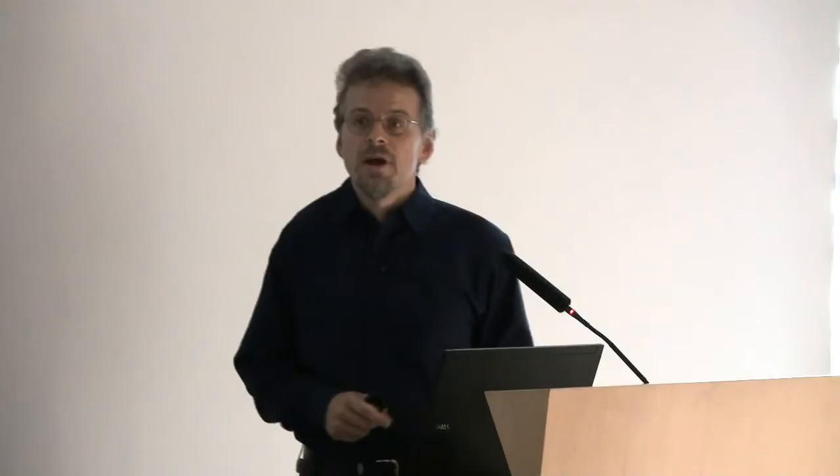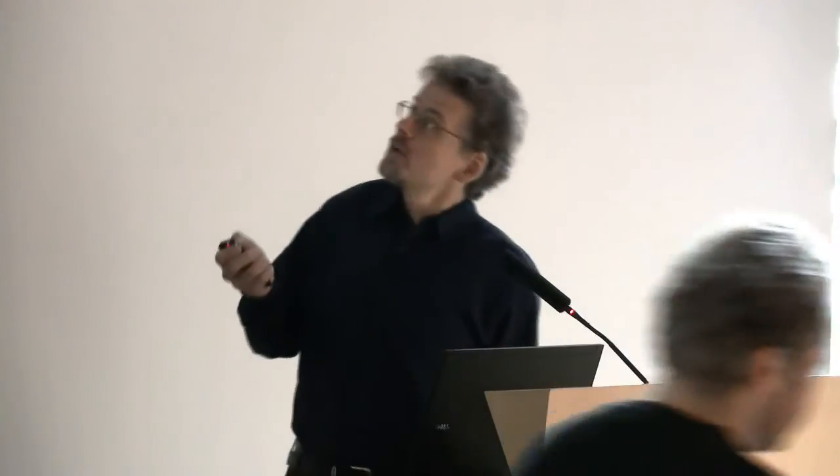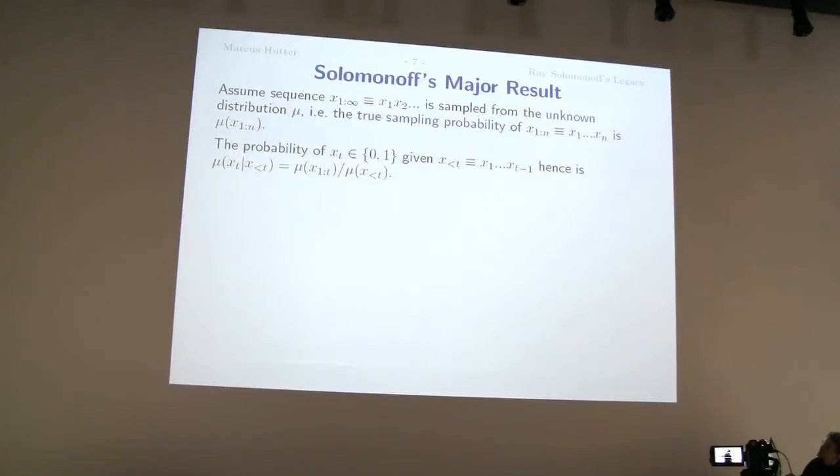And here's Solomonoff's major result. And it took him 40 years, sorry, 14 years to prove that at least if you look at the publication dates of the paper. So 64, he defined his a priori probability and he argued that this is a good thing. And in 78, he proved that it's indeed good for prediction. And consider a sequence here, x1, x2, x3 and so on, which is sampled from some unknown distribution, mu. And so that's the true sampling distribution. And we assume we don't know that. I mean, that's the learning case. So the probability, the true probability of the next bit being xt, having observed x1, x2 and so on, is just the conditional probability which is defined as this ratio.